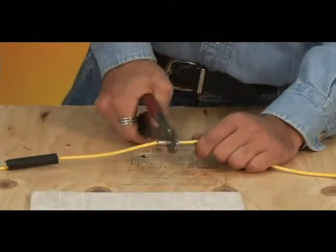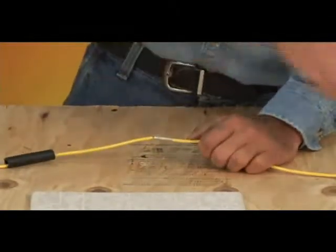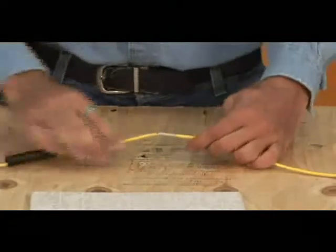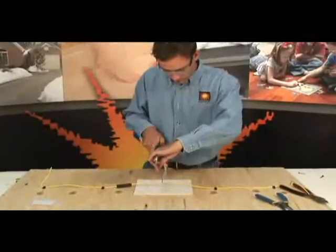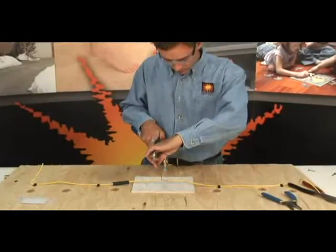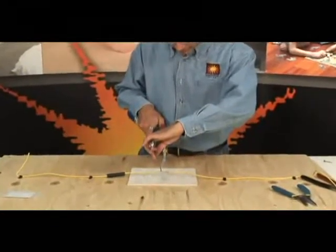Using the butt splice connector provided in the splice kit, crimp the connection well. Then solder the splice with the provided solder, being careful not to burn the insulation on the wire.